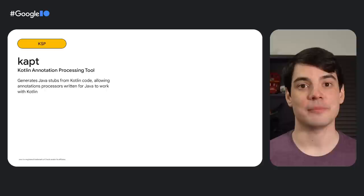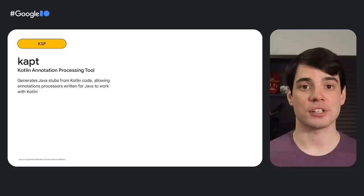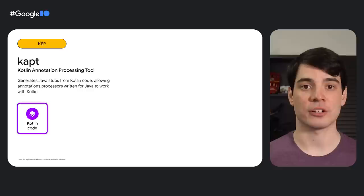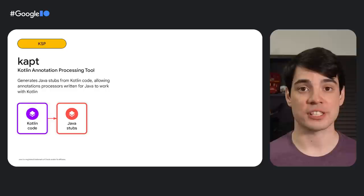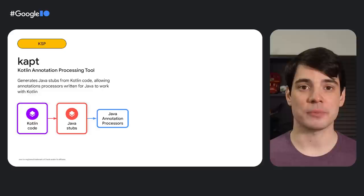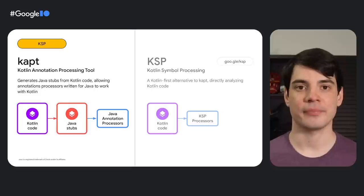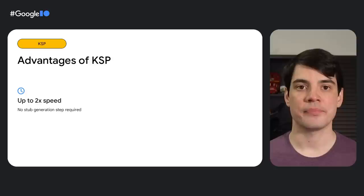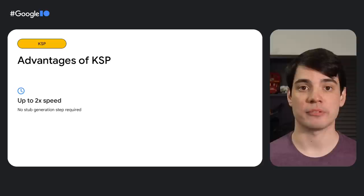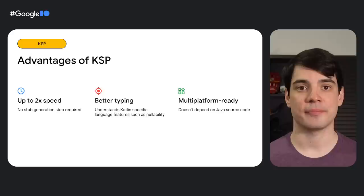Code generation for Kotlin began with KAPT, the Kotlin annotation processing tool, which enables the use of annotation processors written for the Java programming language with Kotlin code. KAPT works by generating Java stubs from your Kotlin files that the processors can then work with. This stub generation is a time-consuming operation and has a significant impact on the build speed of projects that use annotation processing. This is why we built Kotlin Symbol Processing, or KSP, which is a Kotlin-first alternative to KAPT. KSP analyzes Kotlin code directly, which has several benefits: it's up to twice as fast in clean builds, as there's no stub generation required. It has a better understanding of Kotlin's language constructs and type system, such as nullability, and it supports multi-platform projects as it doesn't depend on Java.